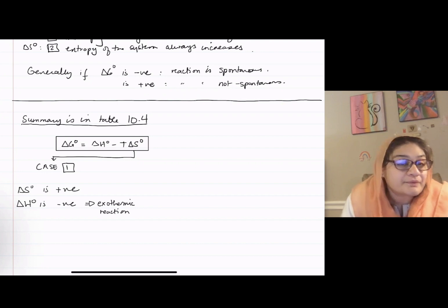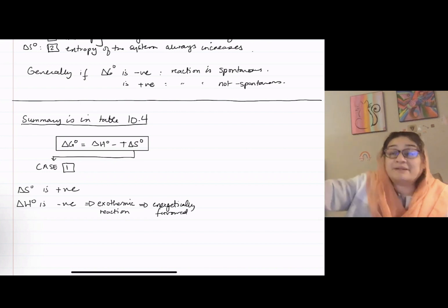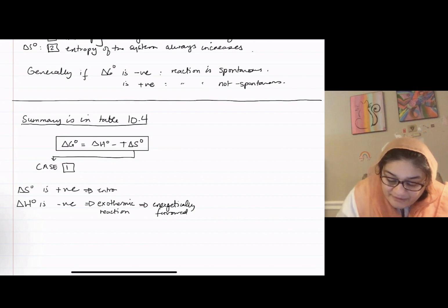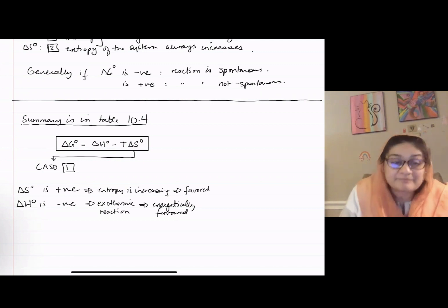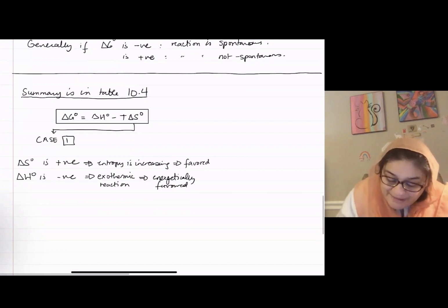It gives off heat. So will it be favored? This means this is energetically favored. The probability that it will continue becomes higher. Now, ΔS is positive, which implies entropy is increasing, which means this is also favored.